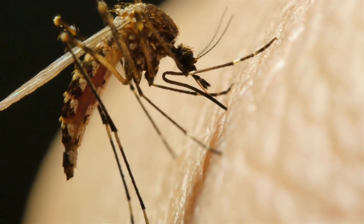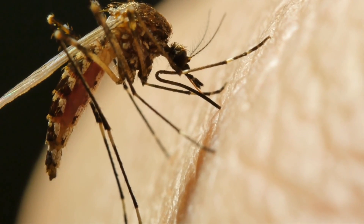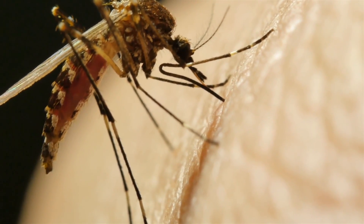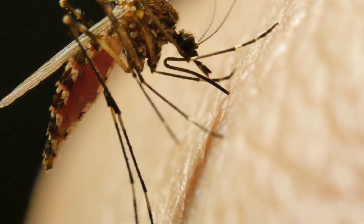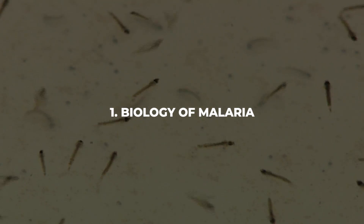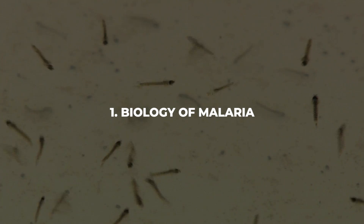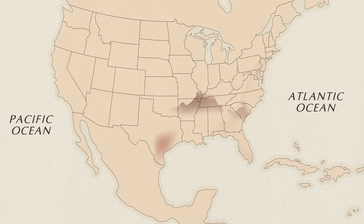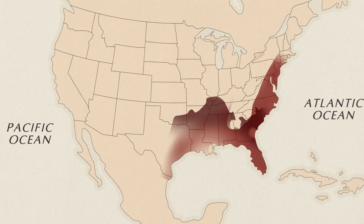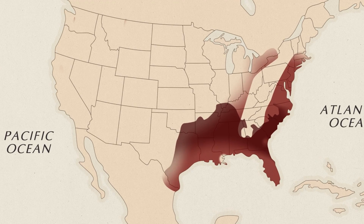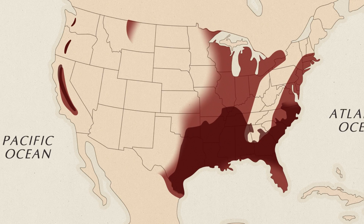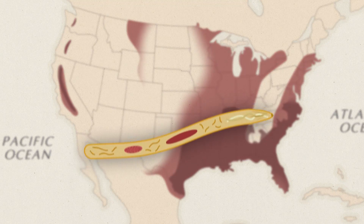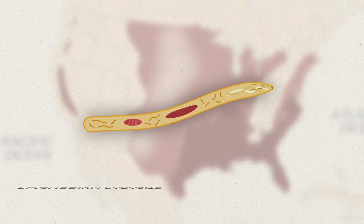So how is it that malaria once thrived in the US, and why did it disappear? And perhaps most importantly, can the methods of its elimination in the US be copied elsewhere? To understand the spread of malaria in the US, it's important to consider the life cycle and behavior of the plasmodium parasite and its vector, the mosquito.